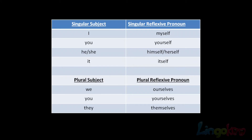The next thing I want to do is make a table of reflexive pronouns and understand when we use which one. Let's look at the singular subjects: I, you, he, she, and it. The reflexive pronoun for I is myself. For you, it's yourself. For he, it's himself. For she, it's herself. For a thing, object, or animal, the reflexive pronoun is itself. These are all singular — when you see the ending S-E-L-F, it means just one, which means singular.